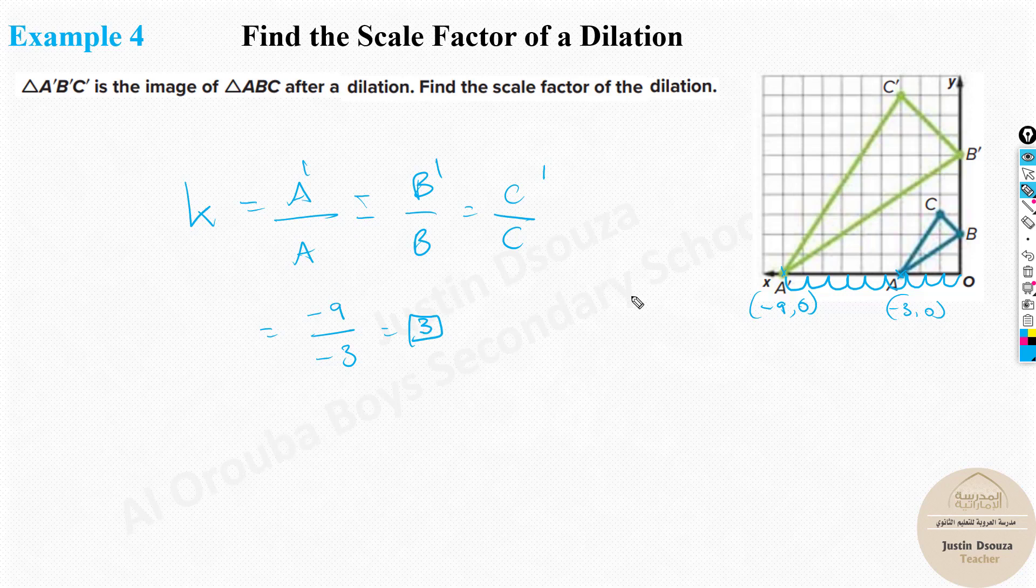So all you need to do is substitute. What is A dash? A dash is minus 9, and since it's 0 you can just ignore it. Over here it's minus 3. The answer is positive 3. This is the scale factor. You can try it for all the other coordinates as well.